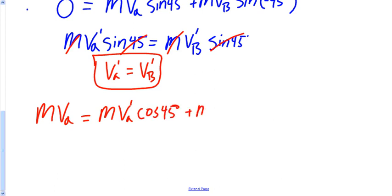Plus the mass of the second billiard ball, times its velocity, which I'm going to now say is the same thing, times the cosine of negative 45 degrees.